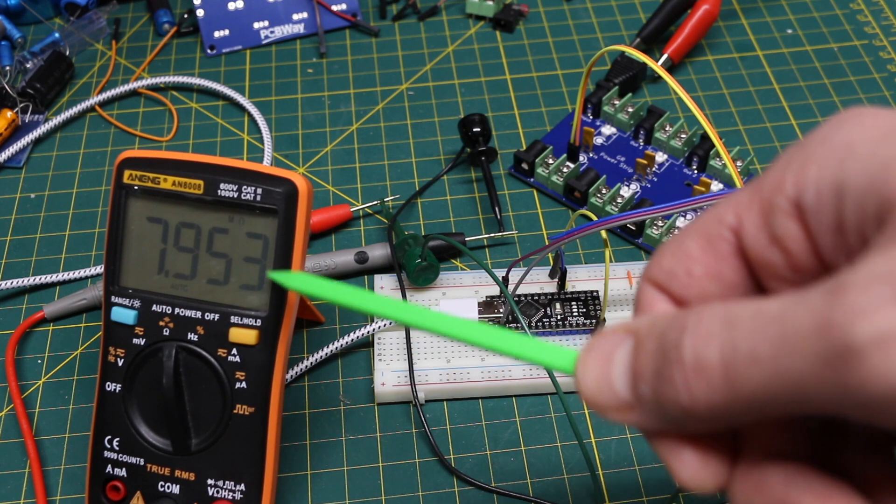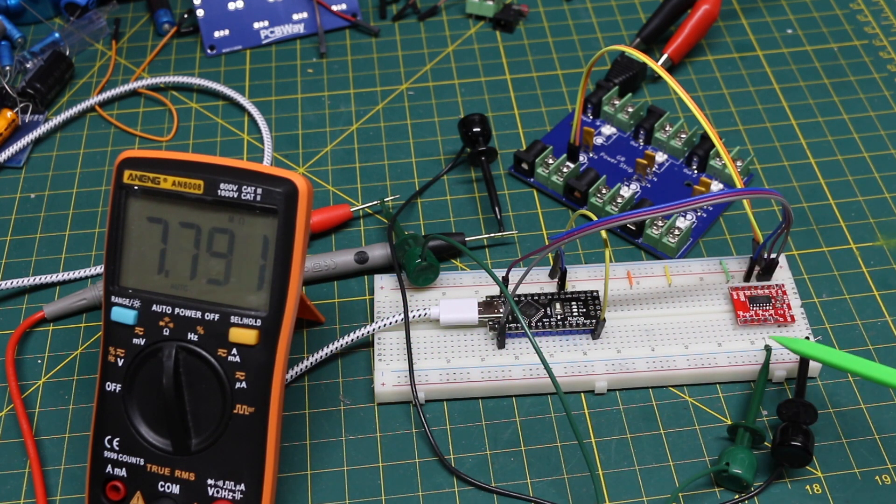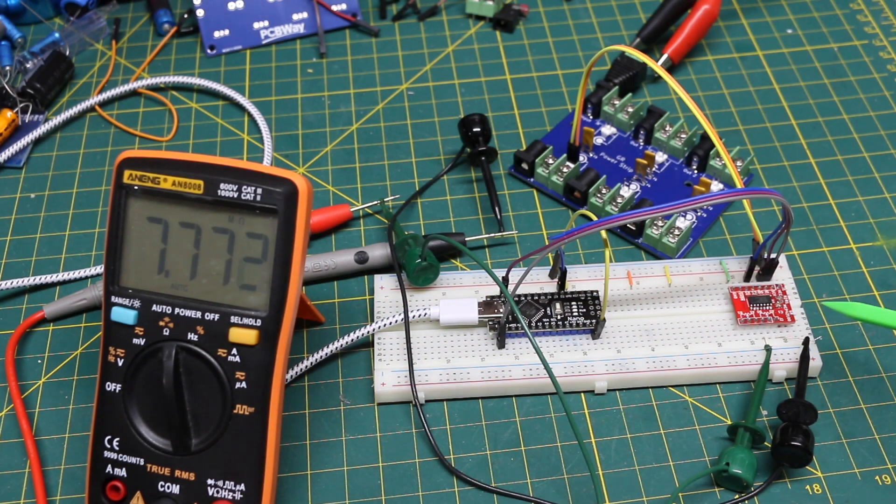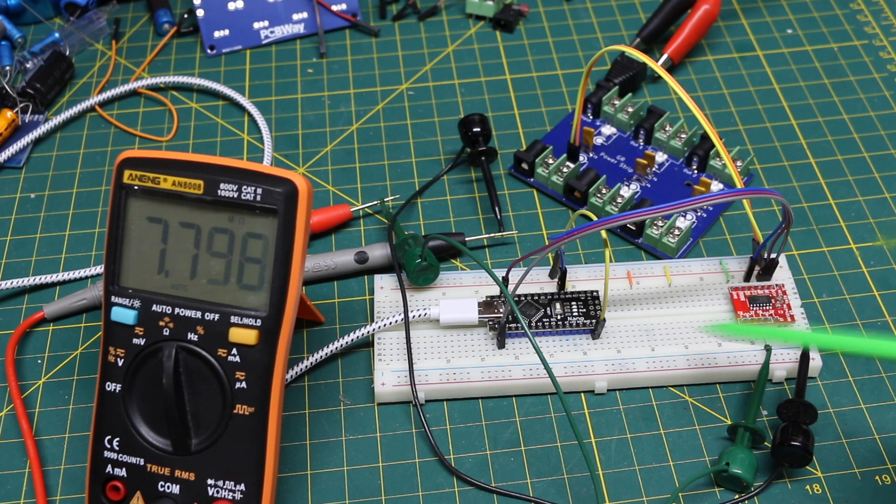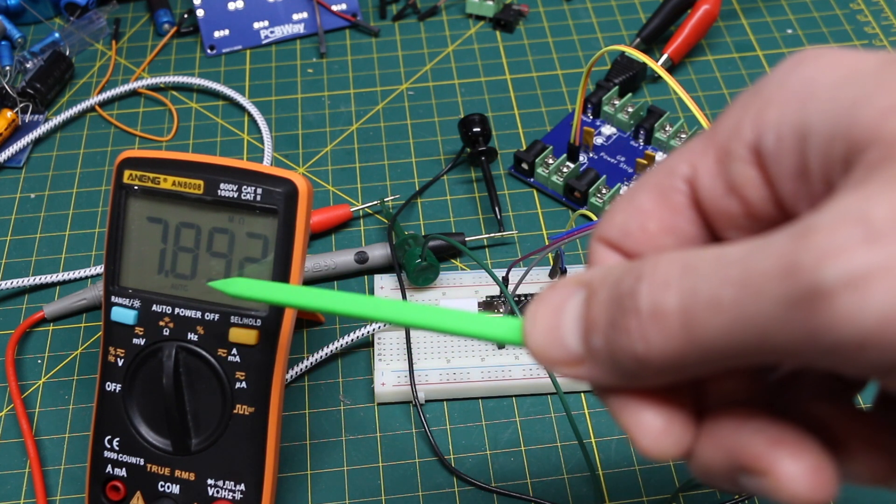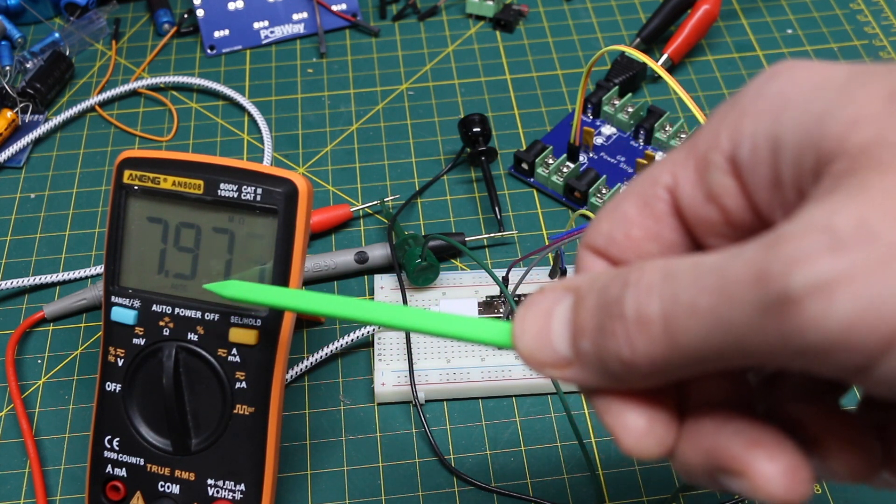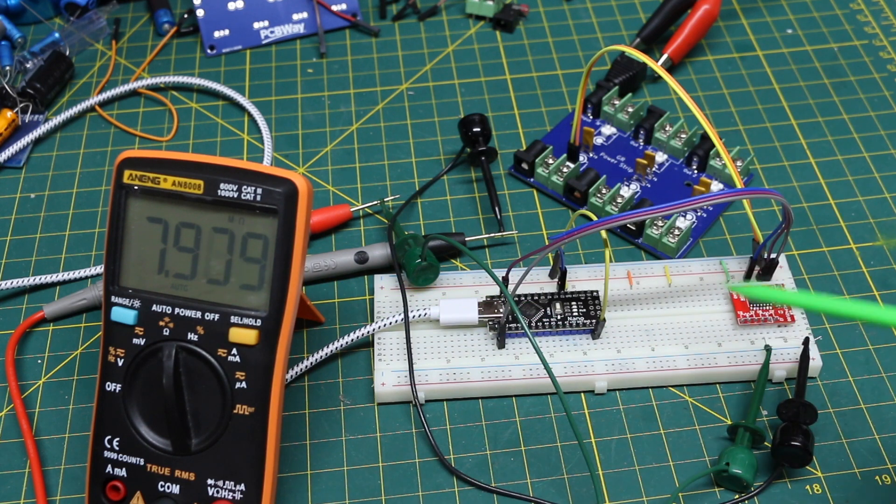Right now the ohmmeter is connected across the end terminals of pot 0. So it's on A0 and B0. There's no wiper connected, and with no power connected we just have high impedance right now, so it's about 7.9 megs across the pot. Now I'll give it 5 volts, and we should see close to 100k. And we get 110k or so.